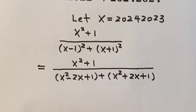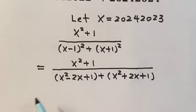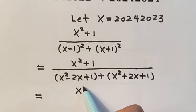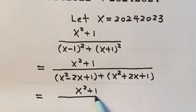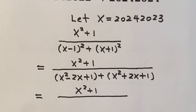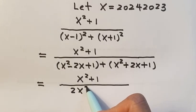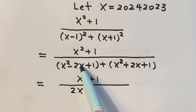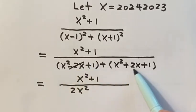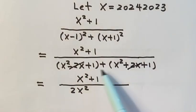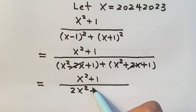So now let's continue to simplify the denominator by combining like terms. We copy the numerator. Let's combine like terms: x squared, x squared, x squared, that's 2x squared. Negative 2x and 2x, they cancel out. Then 1 plus 1, that's just 2.